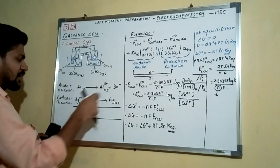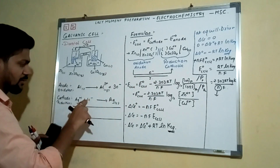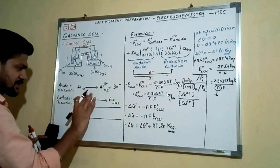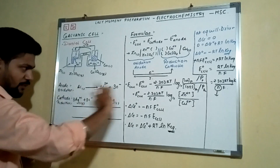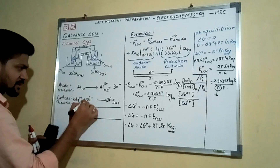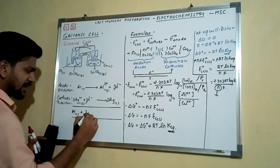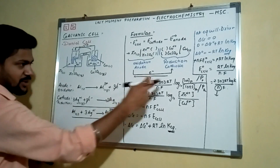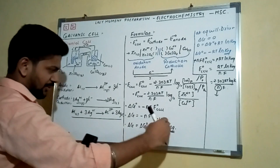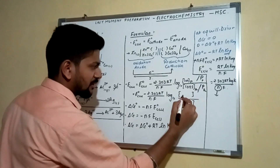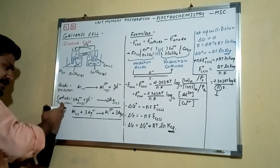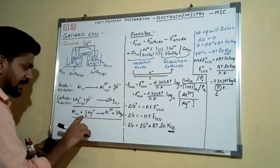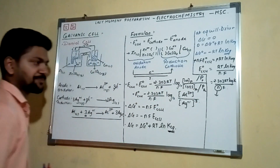To balance the Al/Ag reaction, multiply the oxidation half-reaction by 1 and reduction by 3, giving 3e⁻ on each side. The balanced overall reaction is: Al(s) + 3Ag⁺(aq) → Al³⁺(aq) + 3Ag(s), so n = 3. In the Nernst equation, the concentration term becomes [Al³⁺] / [Ag⁺]³, since Ag⁺ has a stoichiometry of 3 — the stoichiometric coefficient goes as the power.